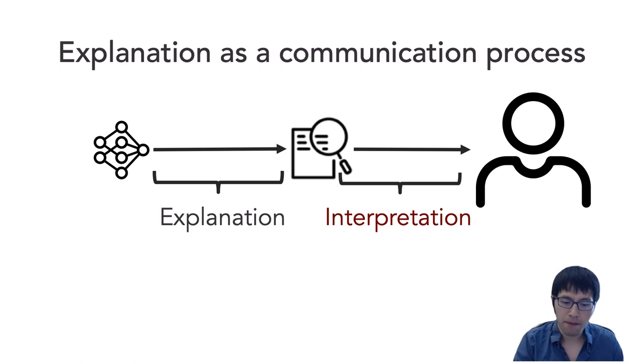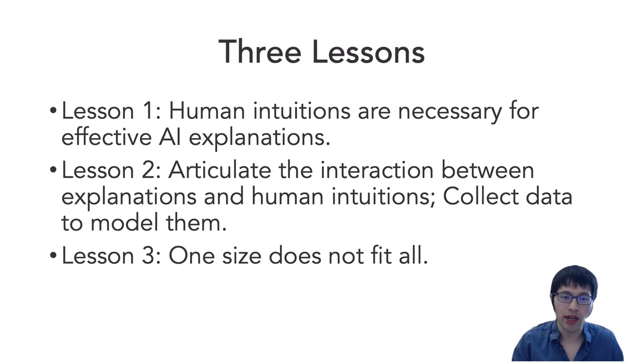That is where I think the problem lies. We need to think of explanations as a communication process where we look carefully at this next step: after explanations are generated, looking at how humans would interpret such generated explanations and whether those explanations can serve the goals that a human wants to do with AI. With our work on this interpretation step, I summarized them into three lessons.